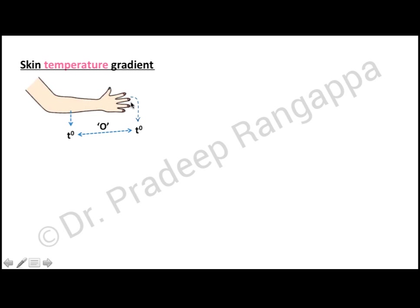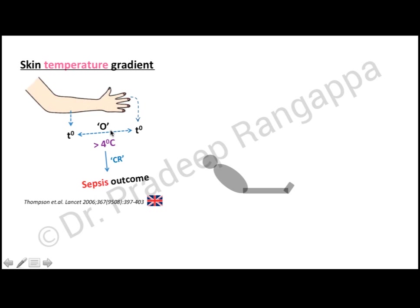The skin temperature gradient was observed by a UK group. You measure temperature at the fingertip and at the forearm — the gradient should be zero. If there is a difference of more than four degrees Celsius between the fingertip and forearm, it is associated with poor outcomes in sepsis and may indicate fluid deficit, making it a potential marker for fluid responsiveness.